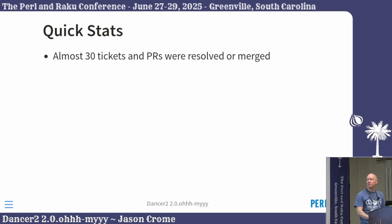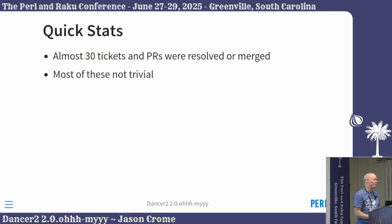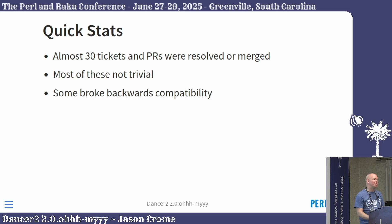Just some quick stats. There's almost 30 tickets or pull requests that are going to be addressed by this latest version. Most of these were not trivial. And some of them broke backwards compatibility, which is why we're changing the big number on this release from 1.0 to 2.0.